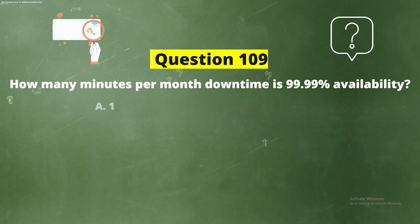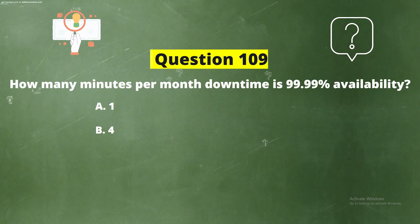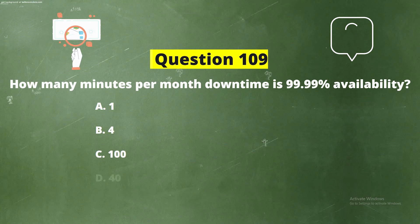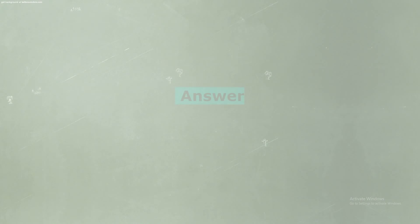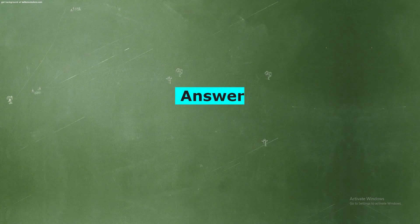Question 109: How many minutes per month downtime is 99.99% availability? The options are: one, four, 100, or 40 minutes. The correct answer is Option B: four minutes.